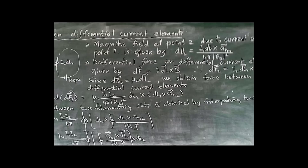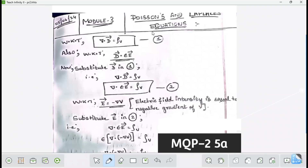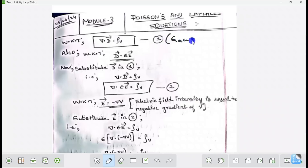Now we will derive Poisson's and Laplace's equations. We know that del dot D = ρv, from Gauss's law — take this as equation one. We also know that D = ε E, from electric field density. Substituting D in equation one, we get del dot εE = ρv — take this as equation two.